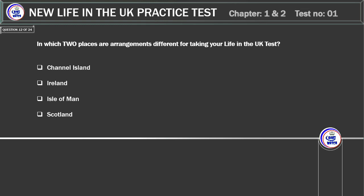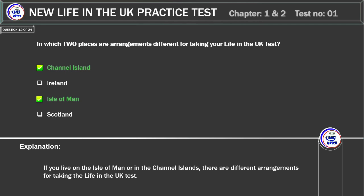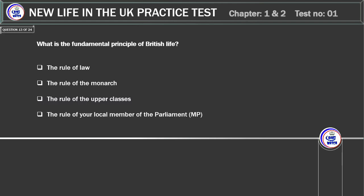In which two places are arrangements different for taking your Life in the UK test? Channel Islands. Isle of Man. Scotland. Correct answer: Channel Islands and Isle of Man. Explanation: if you live on the Isle of Man or in the Channel Islands, there are different arrangements for taking the Life in the UK test.